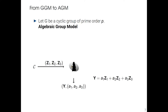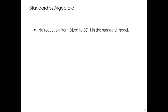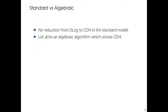Now I have explained the difference between the algebraic group model and the generic group model. I would like to show you why this model is also quite different from the standard model. In the standard model, we don't know if DLOG and CDH are equivalent. We know that DLOG is harder than CDH, the computational Diffie-Hellman problem, but we don't know if DLOG is strictly harder or not.